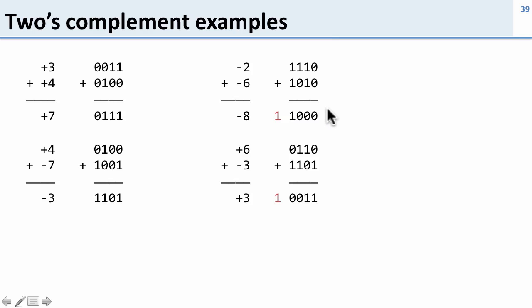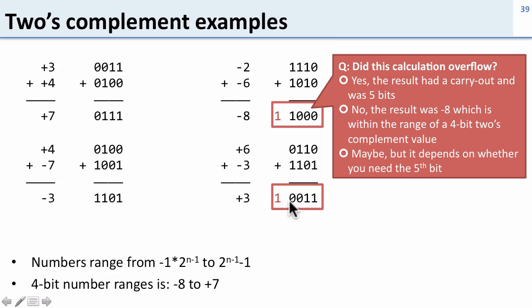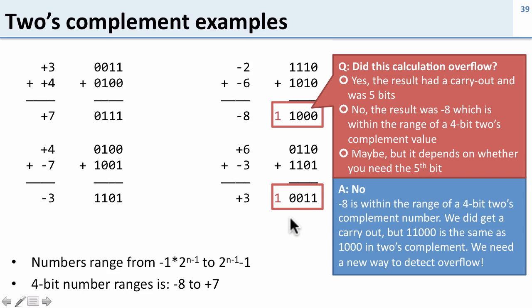Here's another example: minus 2 minus 6, or plus 6 minus 3. The numbers range here from minus 8 to plus 7. All these results are within the range, but notice there's a carry out here — we have an overflow carry out. Did these calculations overflow? We had a carry out of the most significant bit just like in earlier examples. The answer is no, this isn't an overflow, because the results minus 8 and plus 3 are both within the valid range. Even though we had this carry out — which for unsigned numbers meant an overflow — we're not having an overflow here.